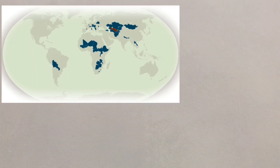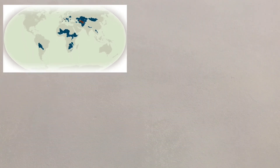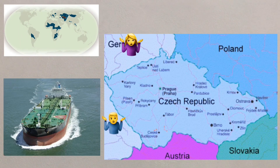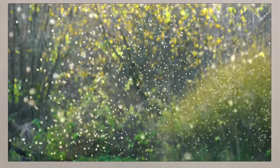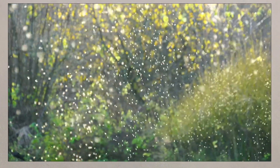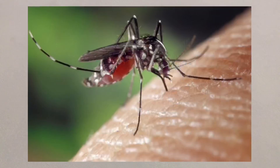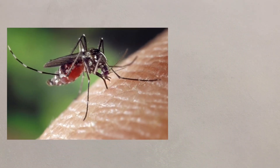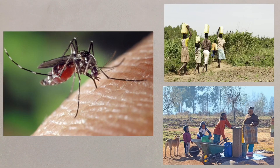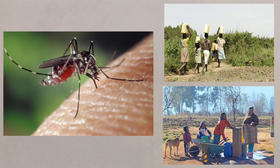Being landlocked as a country means that there's no access to trade from the sea, which can be a very limiting factor. Climate-related diseases and pests, such as mosquitoes, along with inadequate safe water supplies, are all barriers to good economic development.